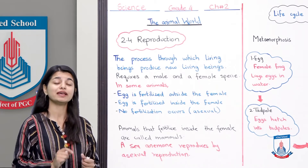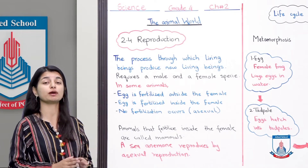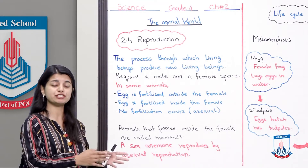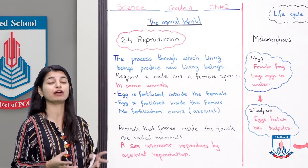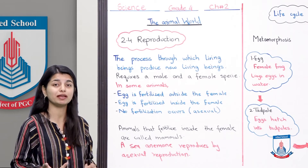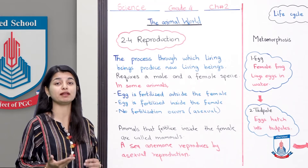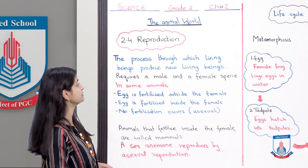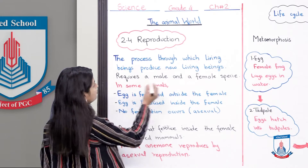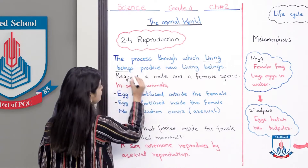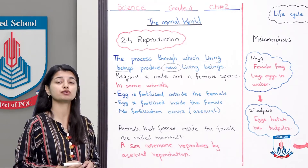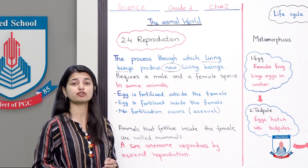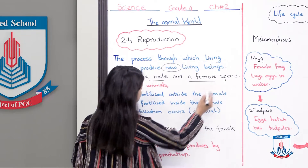How does reproduction happen? There are mainly two things involved: a male species and a female species. The male species will fertilize the egg from the female species, and then a new living being is born. The process through which living beings produce new living beings is called reproduction. It requires a male and a female species.